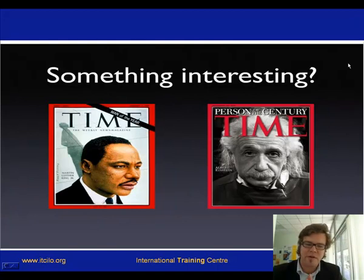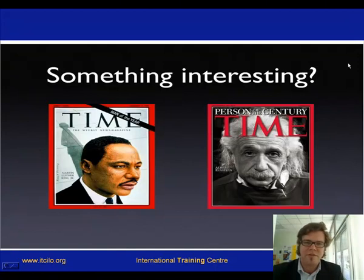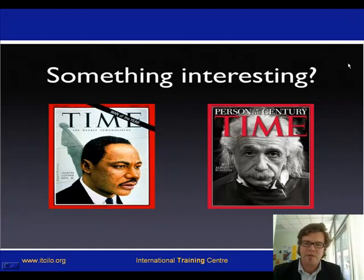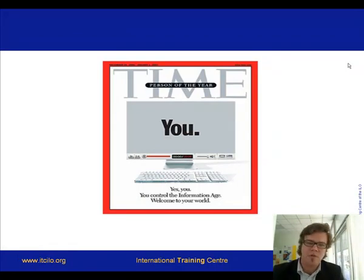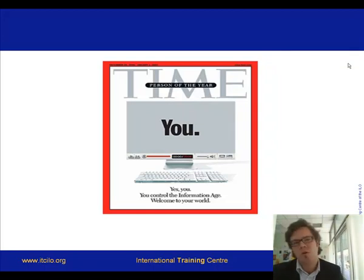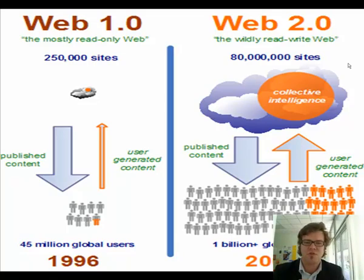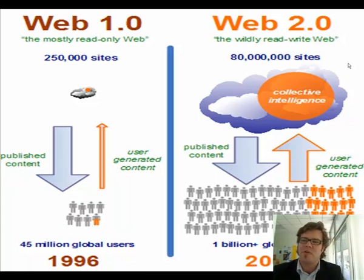As you remember, Time magazine every year chooses its most important person of the year. Until 2006, those were historically important persons — from Martin Luther King to Einstein. But as you remember, it was you who were the person of the year in 2006, because you were contributing to the web, managing your own information — not only downloading but uploading, not only reading but participating in the worldwide web. This was a major reflection of the shift from a Web 1.0 environment towards a Web 2.0 environment, which I explained briefly on Monday.